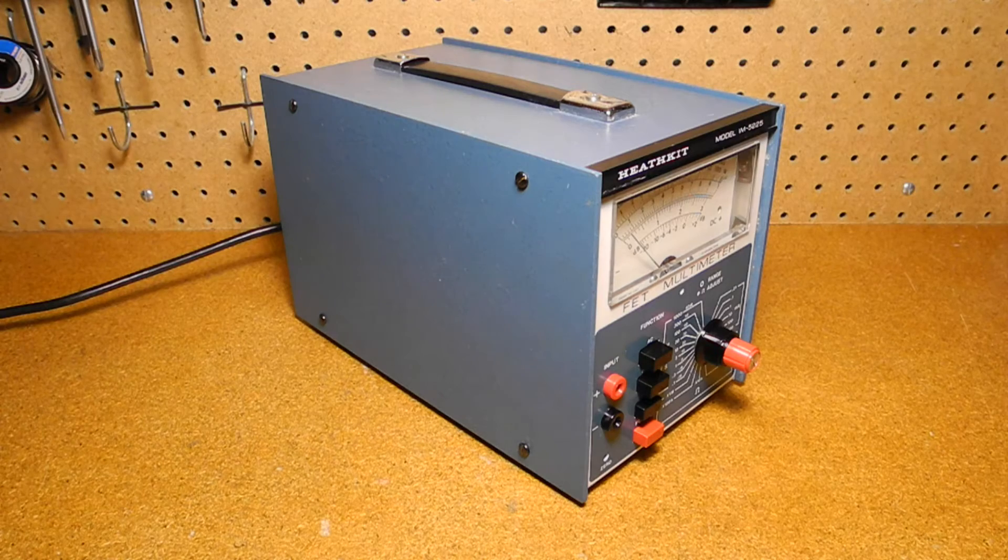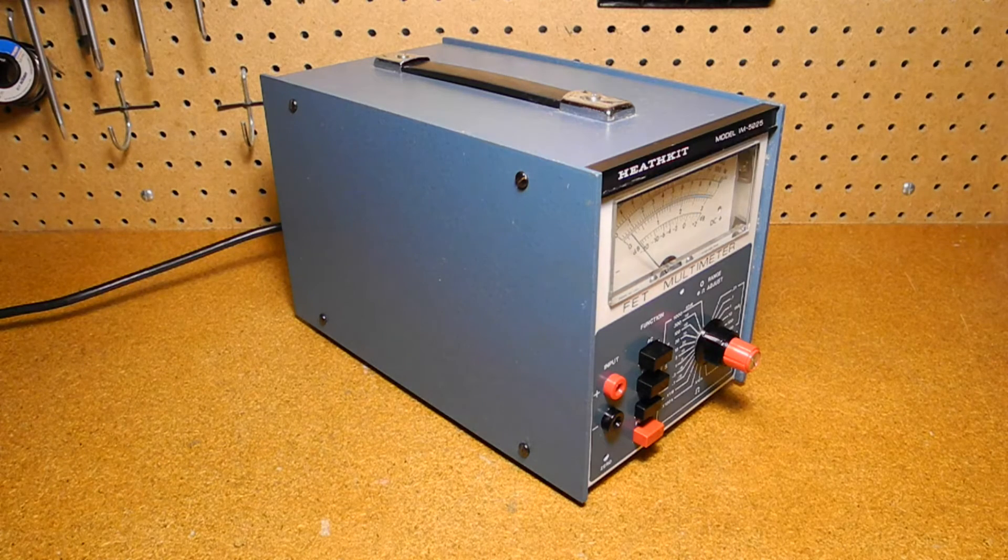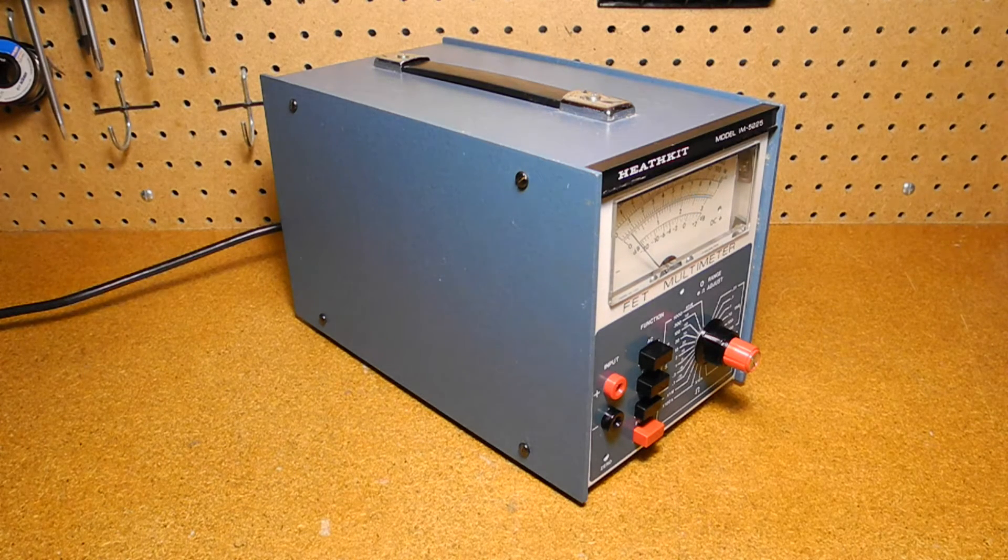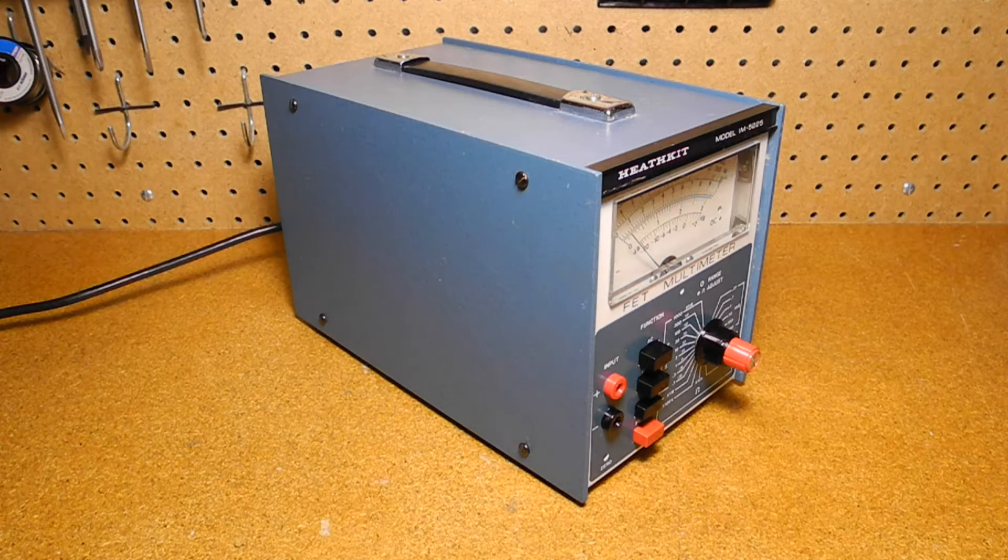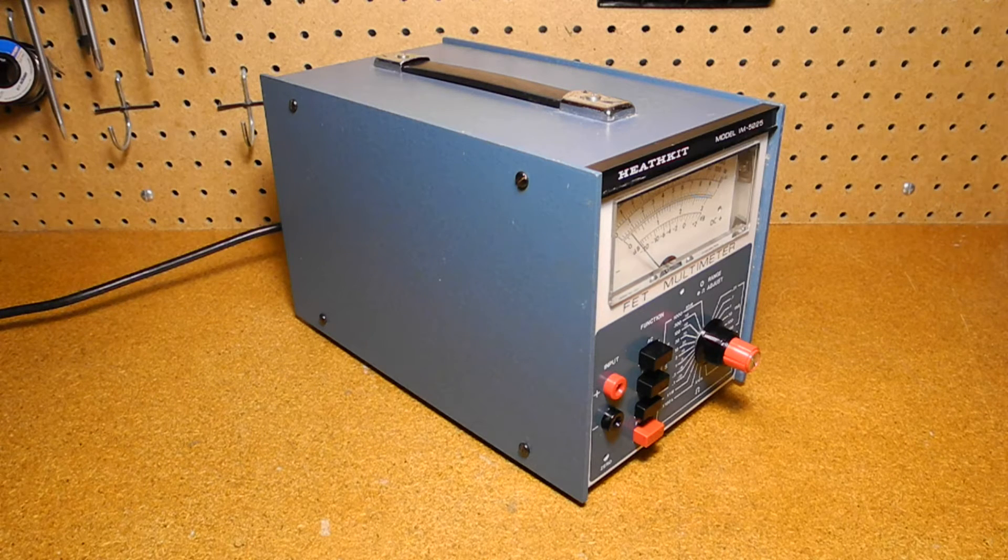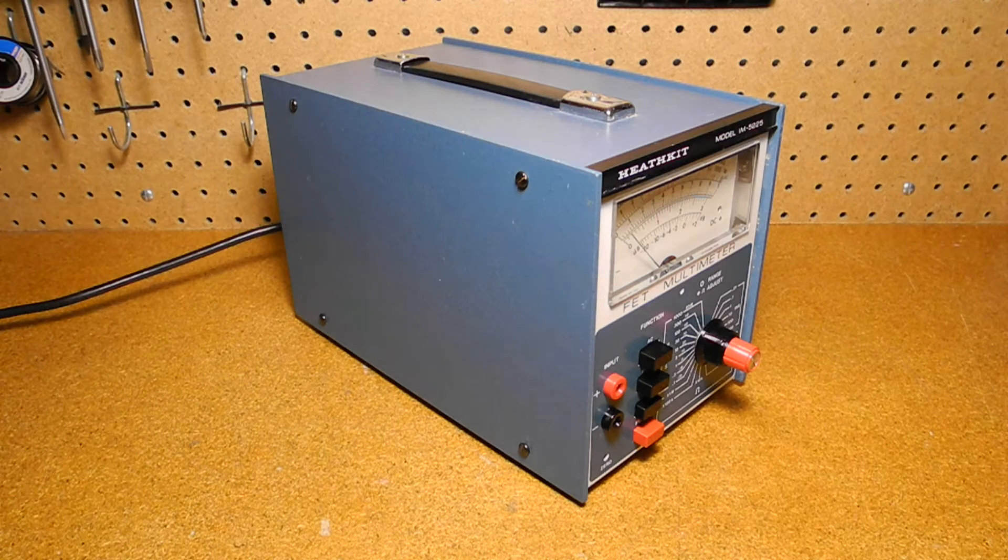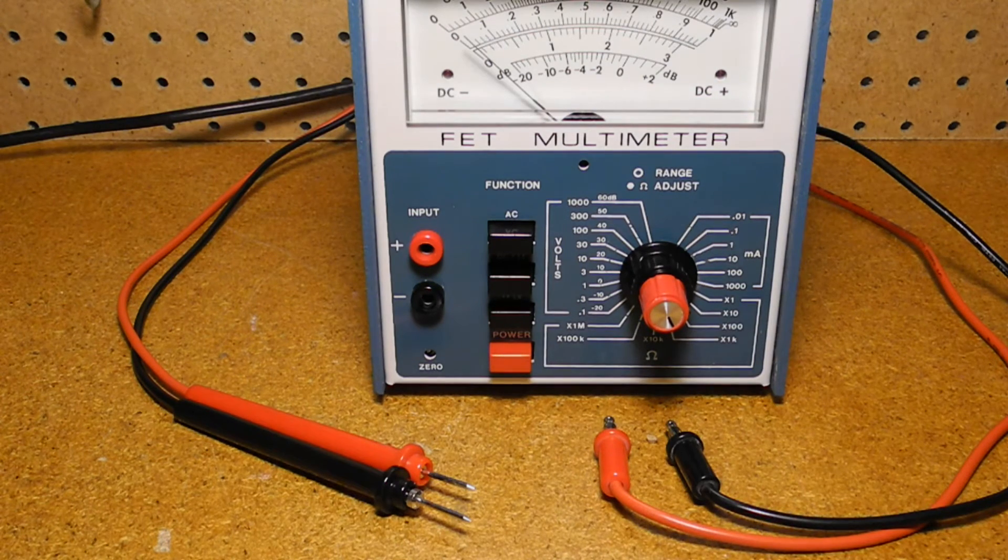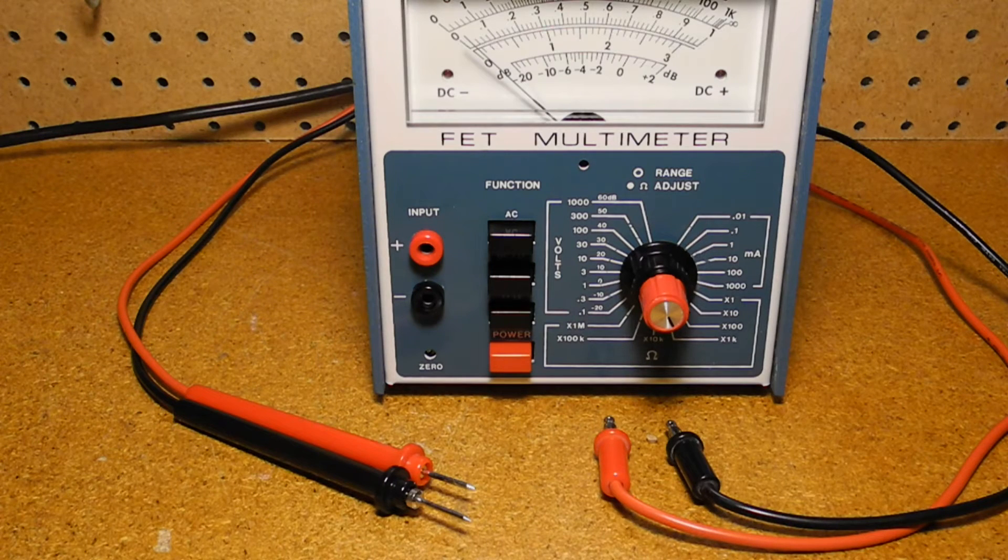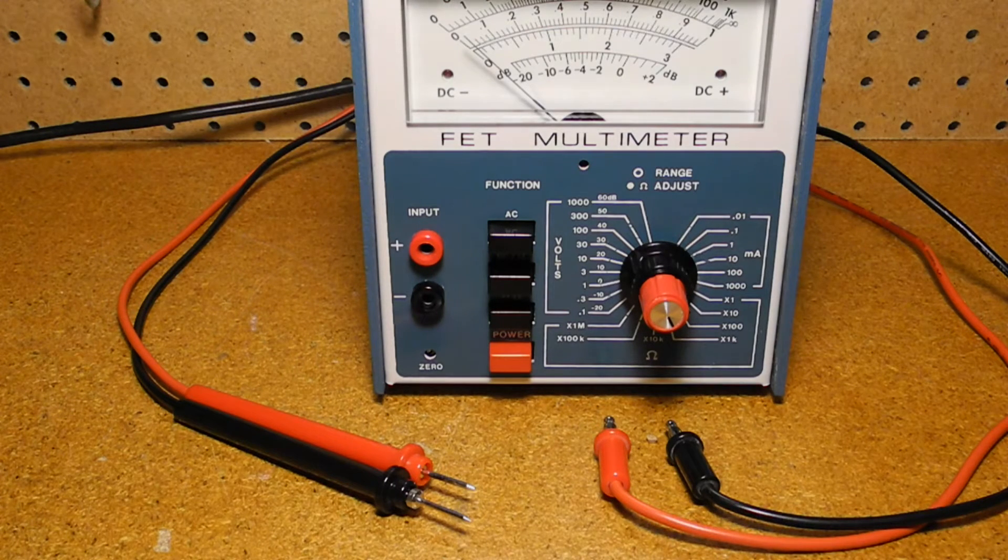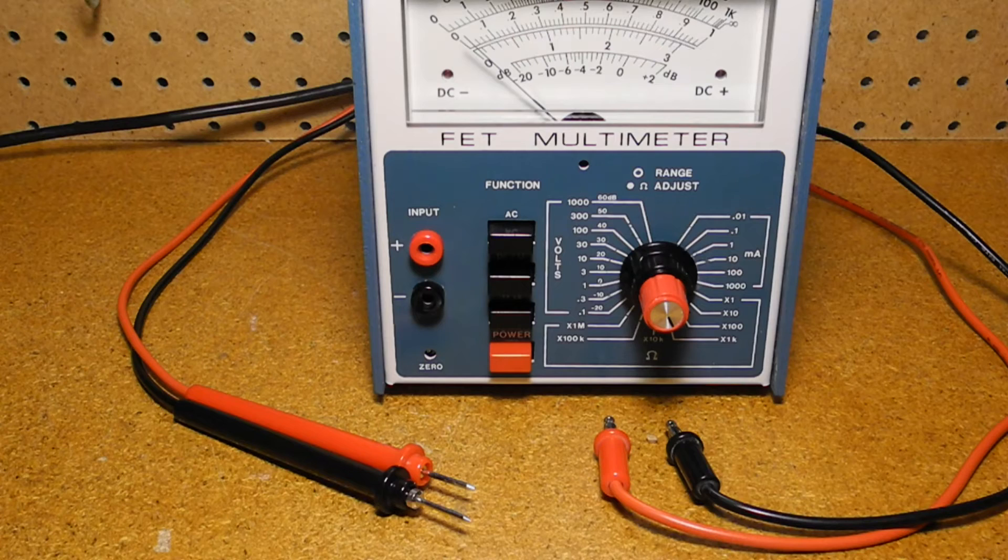I should note that the only Heathkit models I'm aware of that use the same case were the similar-looking IM5238 AC voltmeter and the IT5235 TV yoke and flyback tester. At the front are two banana jacks for the input leads. The original kit included the parts for basic test leads with banana jacks and test probes. These ones are not original and were borrowed from another Heathkit meter.